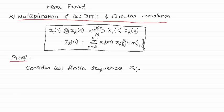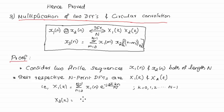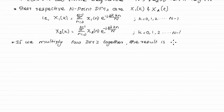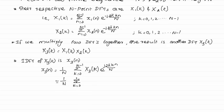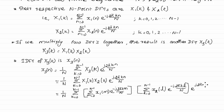Finite sequences x1(n) and x2(n) both of length N have respective N-point DFTs X1(k) and X2(k). If we multiply two DFTs together, X1(k)·X2(k), the result is another DFT X3(k) of the same length N. To find the circular convolution we take the inverse DFT of X3(k). We substitute the expressions for X1(k) and X2(k), using variable m for X1(k) and variable l for X2(k) to distinguish them.